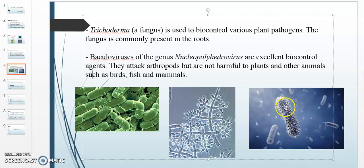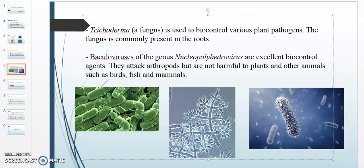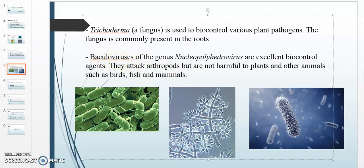Baculovirus is another biocontrol agent. It is not a bacteria but a virus belonging to the genus Nucleopolyhedrovirus. It has a polyhedral capsid and infects larvae of arthropods and insects by solubilizing the outermost protein coat. Baculoviruses are excellent biocontrol agents — they attack arthropods but are not harmful to plants or other animals such as birds, fish, and mammals.